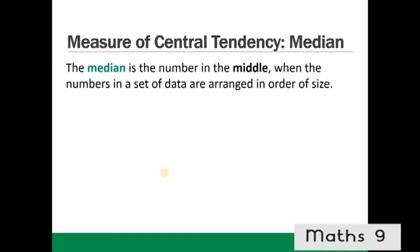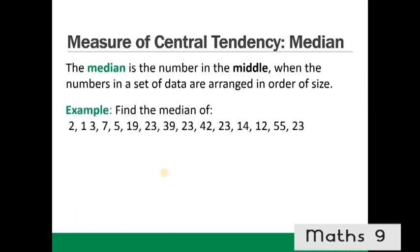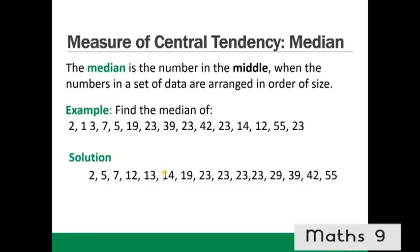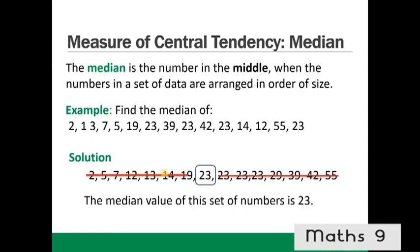Median. The median is the number in the middle when the numbers in a set of data are arranged in order of size. For example, find the median of this set: first arrange the data in order from 2 up to 55, then look for the number in the middle by working from the outsides inwards. We get 23, so the median is 23.